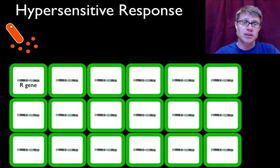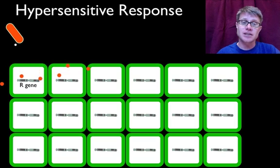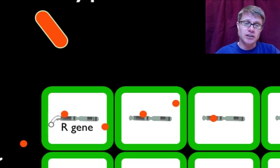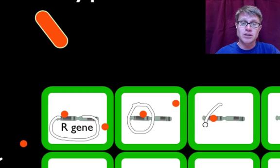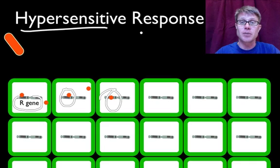This is a bacteria that's trying to infect that plant. The bacteria is going to give off proteins, and those proteins are going to be sensed by the plant. Inside the plant is a chromosome with a gene called an R gene. The goal of the R gene is to sense those invading proteins, and if there's ever a match between those proteins and the R gene, plants are going to undergo a hypersensitive response.